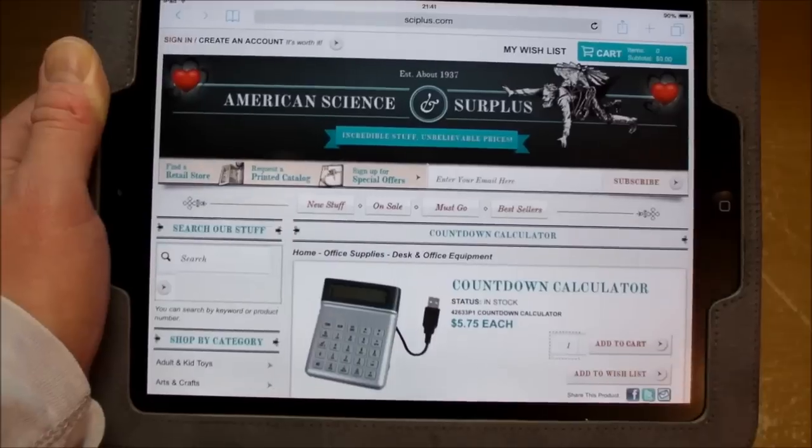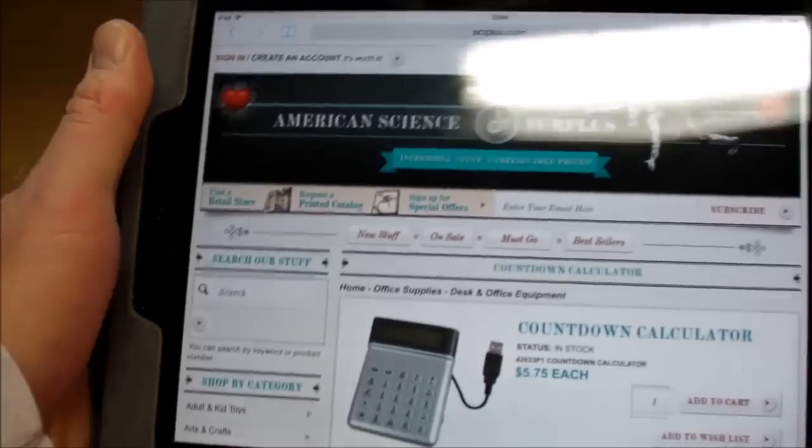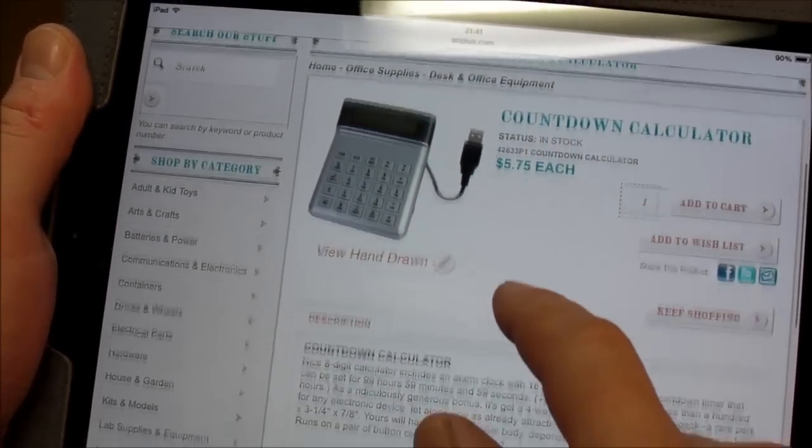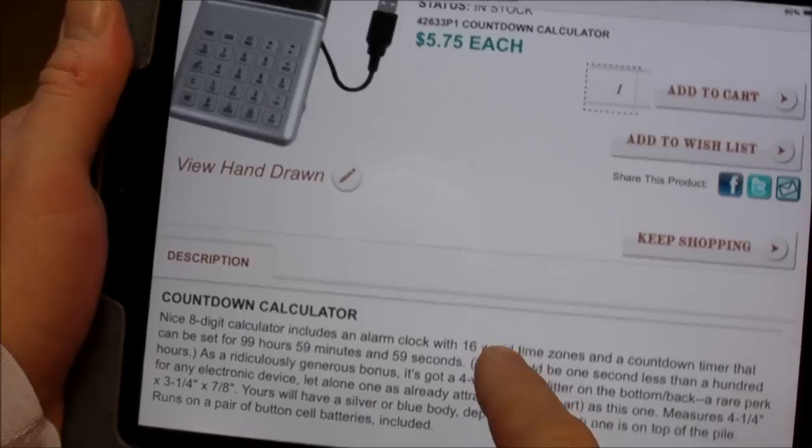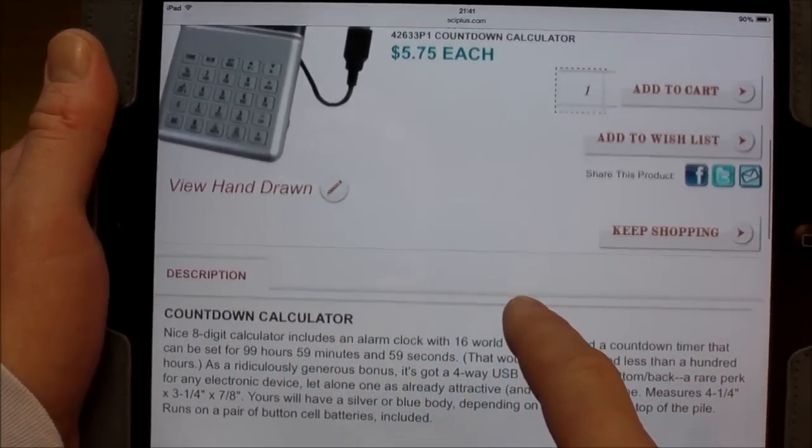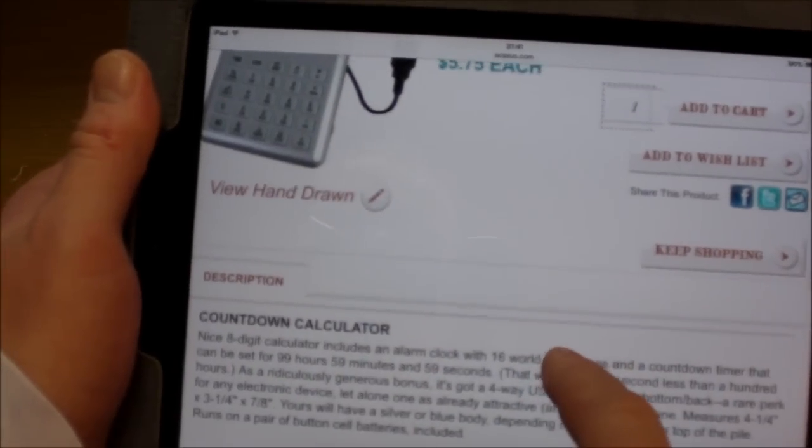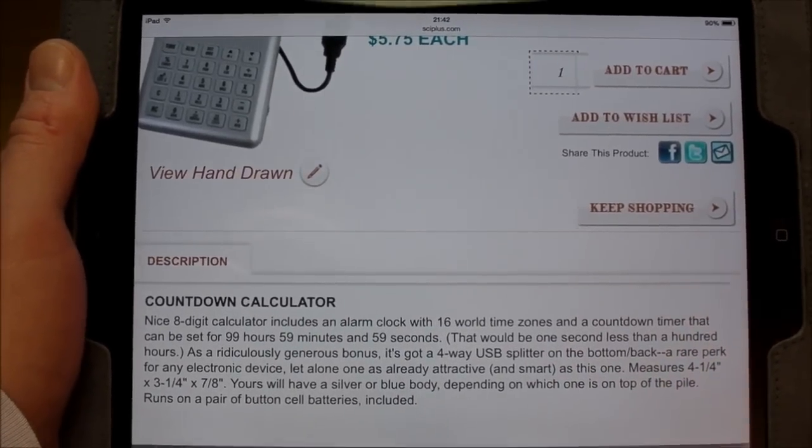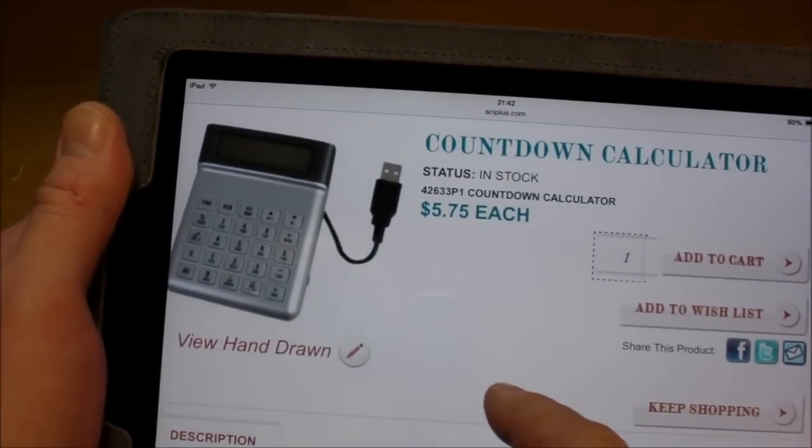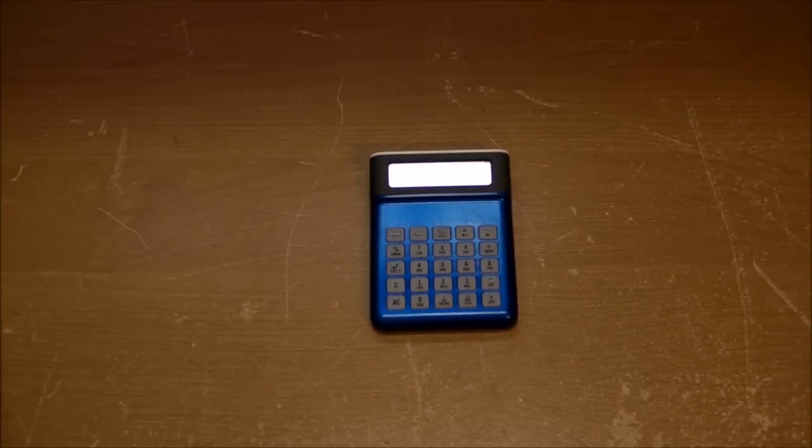Hi everybody. In addition to that cheap analog wind voltage monitor that I bought from American Science and Surplus, I also found this countdown calculator. If you read the description here, it's just a very bizarre product that seems like it should not exist. It's a calculator and a timer and alarm clock and a USB hub, just this weird Frankenstein collection of different functions all in one single electronic piece of crap.